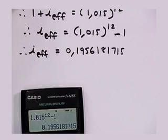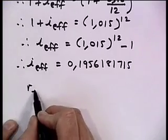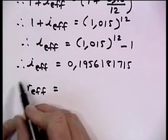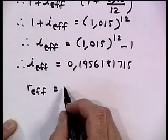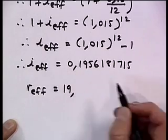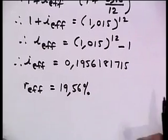Just taking everything — we want to put it as a percentage. As an effective annual interest rate, we're obviously going to work with percentages, so just multiply by 100. That gives us 19.56%. Very, very important calculation to do — converting from the nominal to the effective. You can also convert the other way.